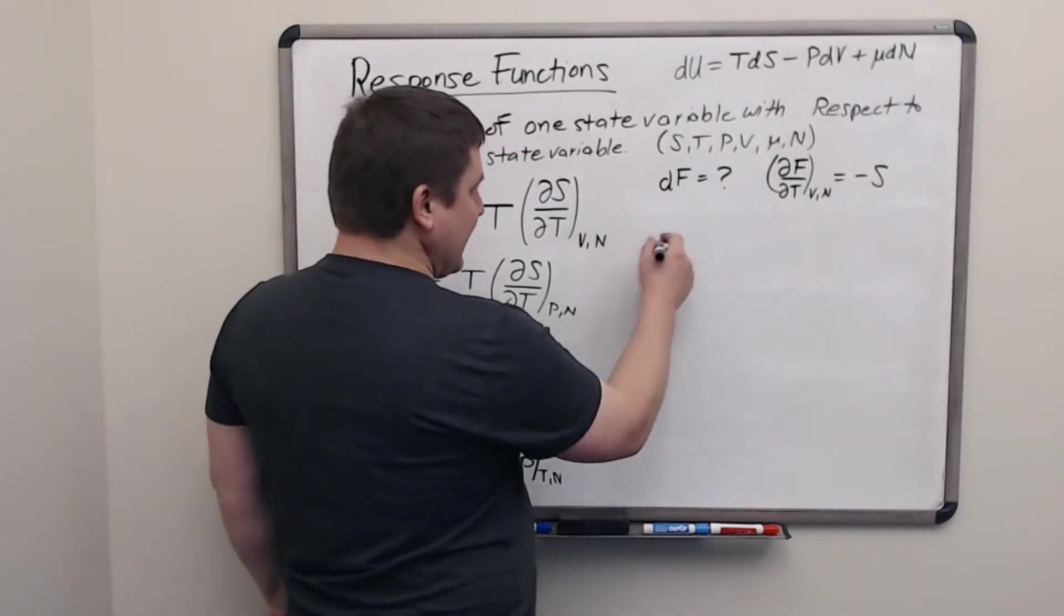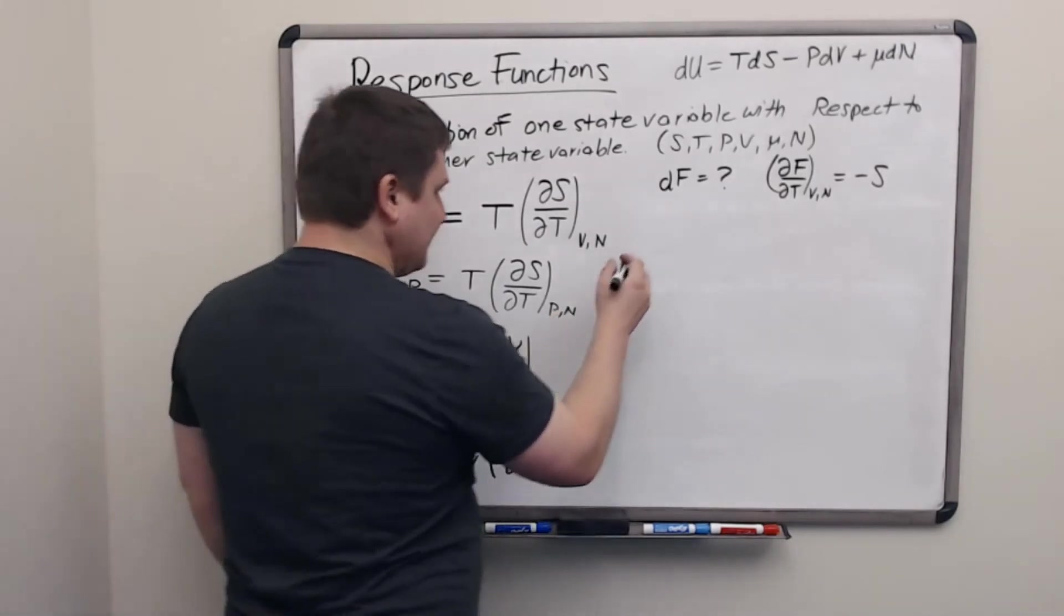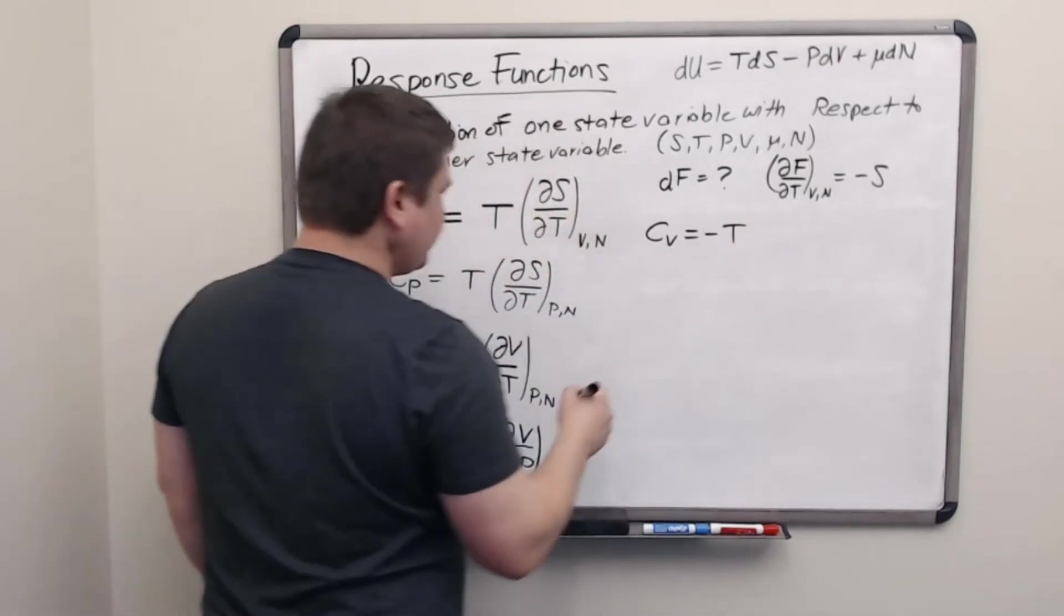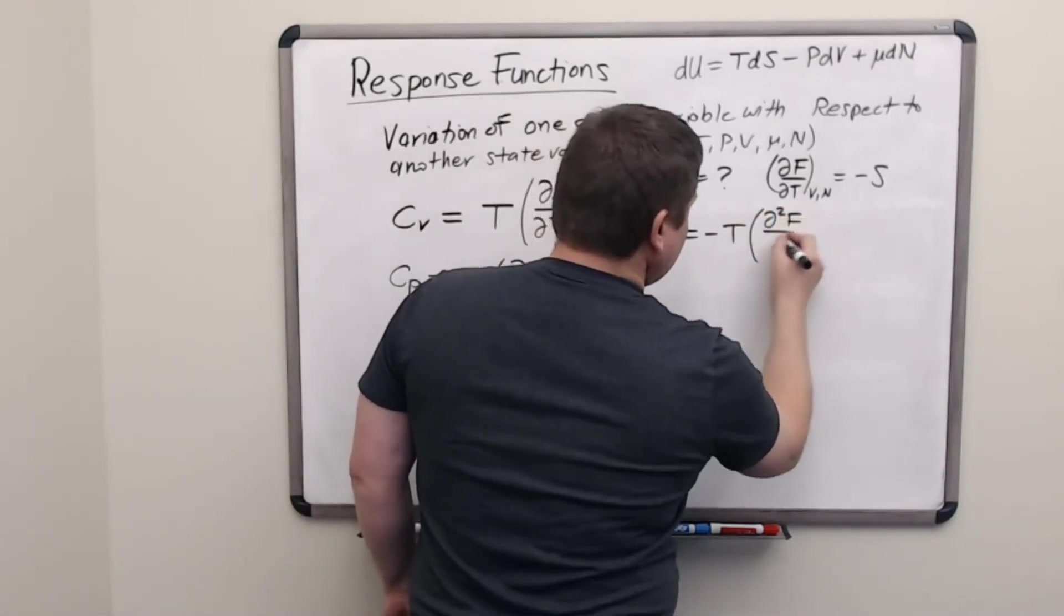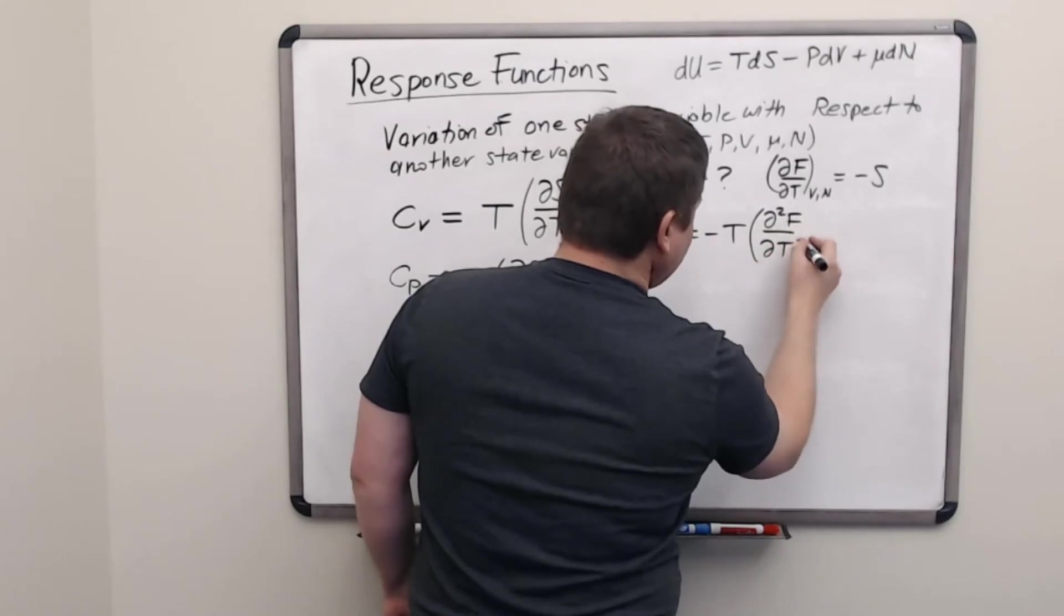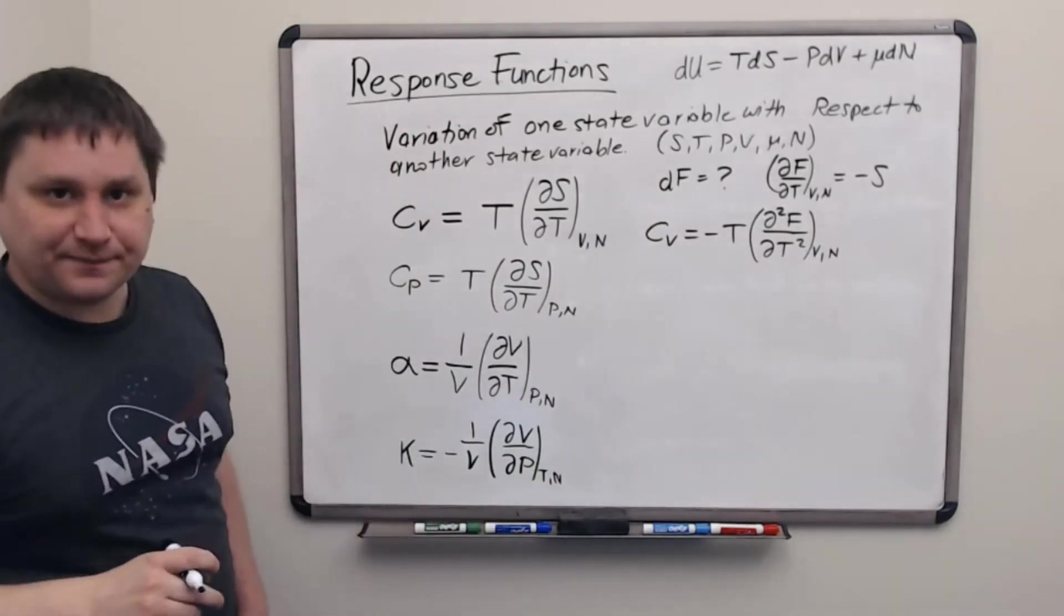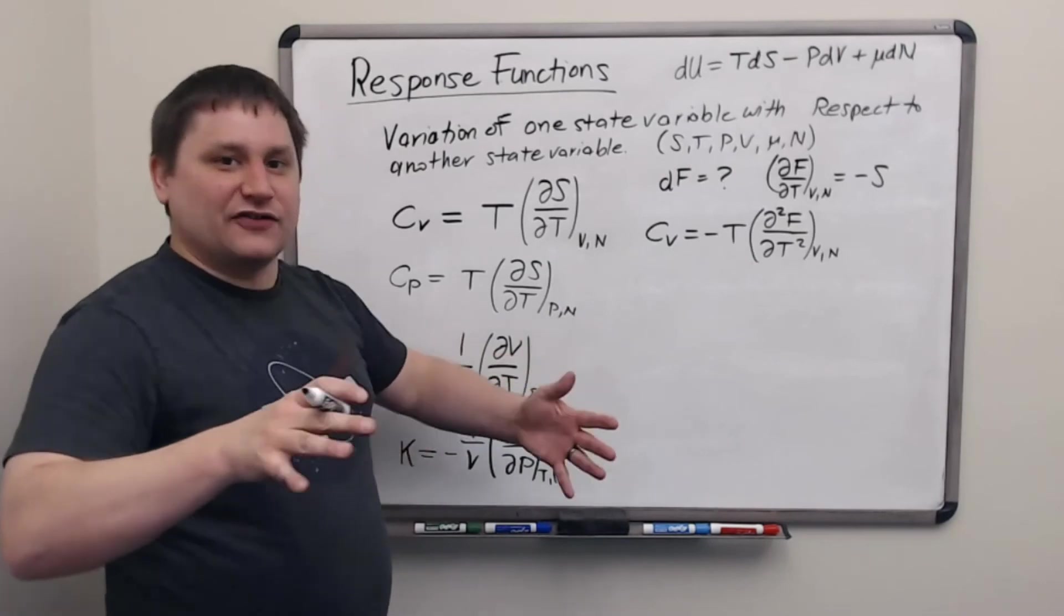Okay, so plugging that in to the formula for the heat capacity at constant volume, then we will get Cv equals minus T times the second derivative with respect to temperature of this Helmholtz free energy function. All right, so that's kind of beautiful, right? You've got this Helmholtz free energy function.